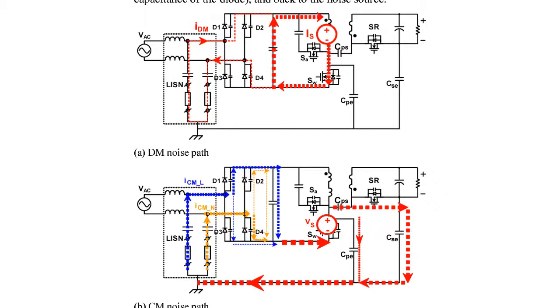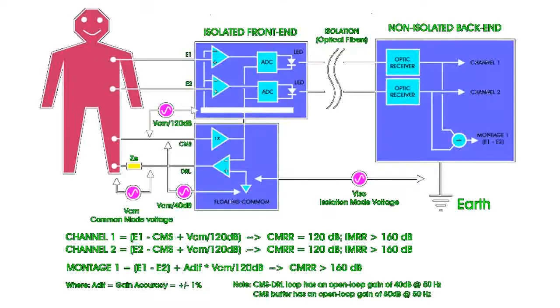The most common methods of treating common mode noise lose their effectiveness as the frequency of the common mode noise increases. Common mode rejection, CMR, techniques exist to prevent common mode noise from being converted to normal mode voltage.